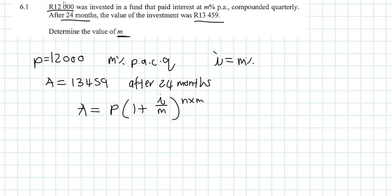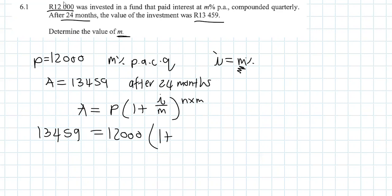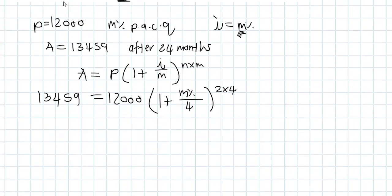The m in this case is m percent, which is actually our interest rate i. A is 13,459 — the end amount. The principal amount was 12,000. It's compounded quarterly so the compounding period is 4. We had 24 months which is 2 years, so 2 years compounded quarterly gives us an exponent of 8.